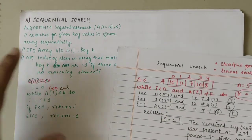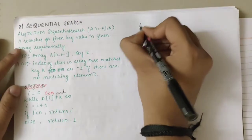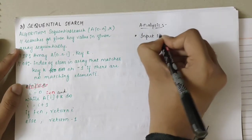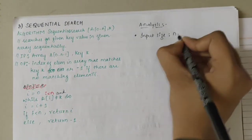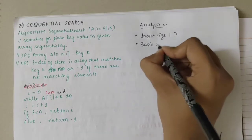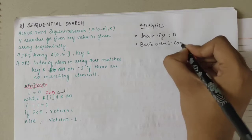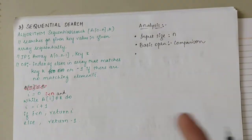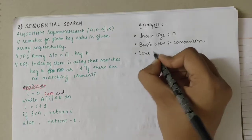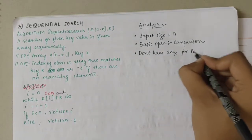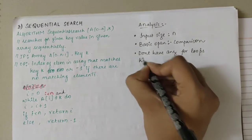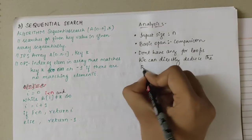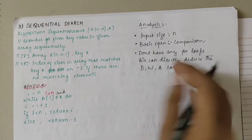Now that we have looked into the algorithm part, let's deal with the analysis part. The first step is taking the input size — I am considering n elements, so the size of the array is n. The next step is identifying the basic operation. Here I am using the comparison operation. Since there are no for loops, we can directly deduce the best, worst, and average cases.